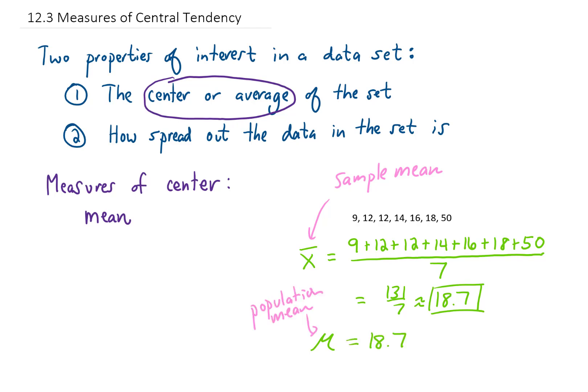The population mean uses the Greek letter mu. But typically, when we're calculating a mean on our own, we're calculating a sample mean. To do that, we add up all of our data values. A notation for that is this sigma symbol here, which means the sum of all of your data values.